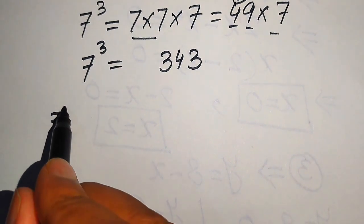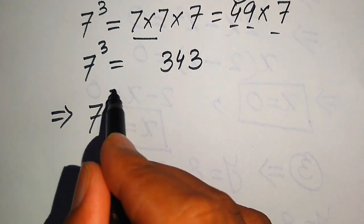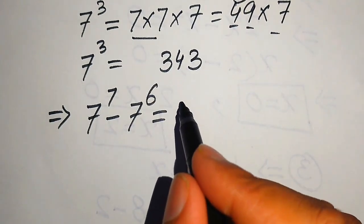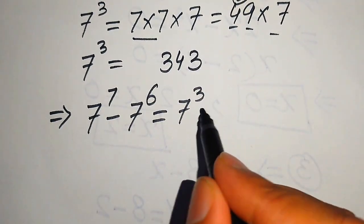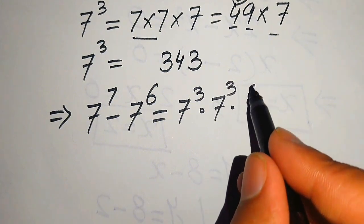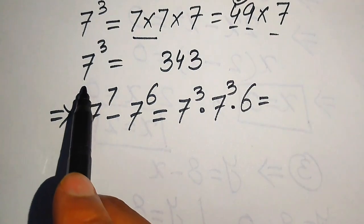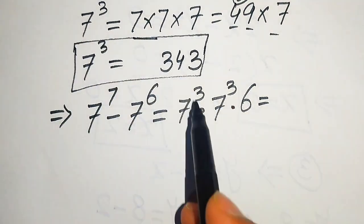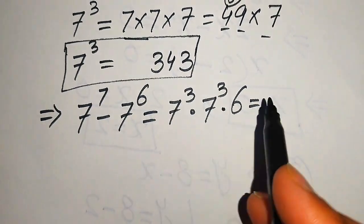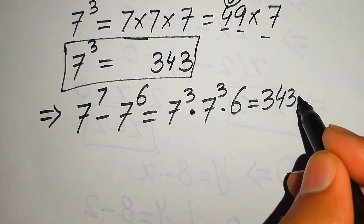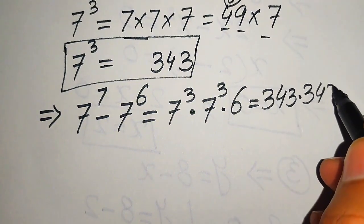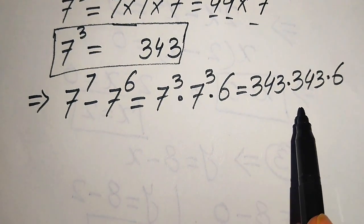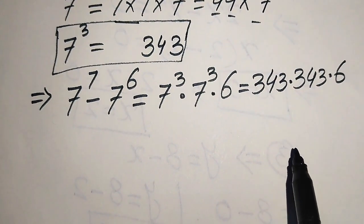So our full expression — 7 to the power of 7 minus 7 to the power of 6 — equals 7 cubed multiplied by 7 cubed multiplied by 6. Substituting 7 cubed equals 343, this becomes 343 multiplied by 343 multiplied by 6. We now need to multiply these larger numbers without using a calculator.